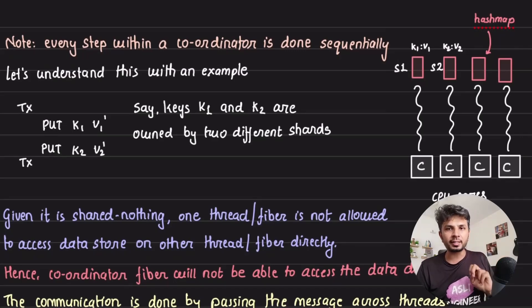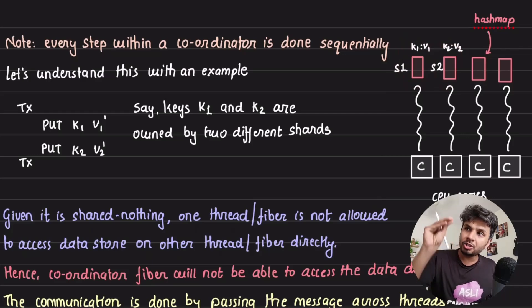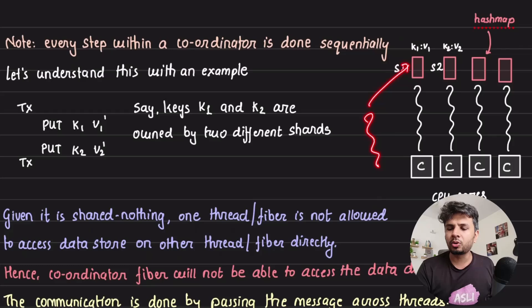The two keys that are involved are K1 and K2, both owned by different shards. Because DragonflyDB has adopted a shared-nothing architecture, you cannot have an IO thread that goes ahead and accesses these two hash tables directly.